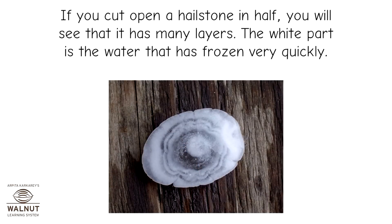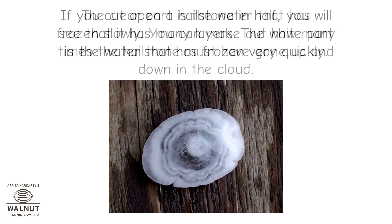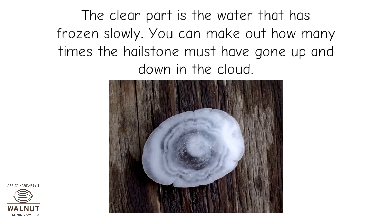If you cut open a hailstone in half, you will see that it has many layers. The white part is the water that has frozen very quickly. The clear part is the water that has frozen slowly. You can make out how many times the hailstone must have gone up and down in the cloud.